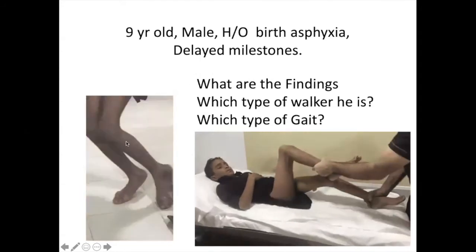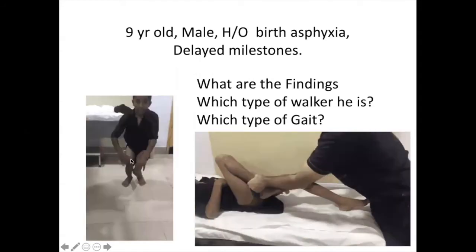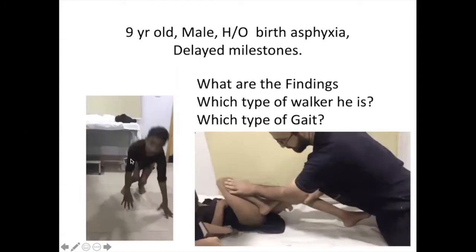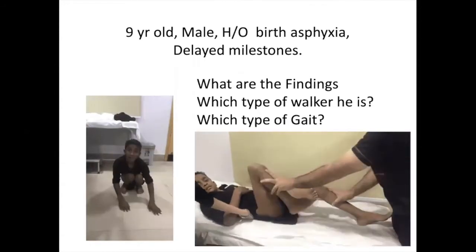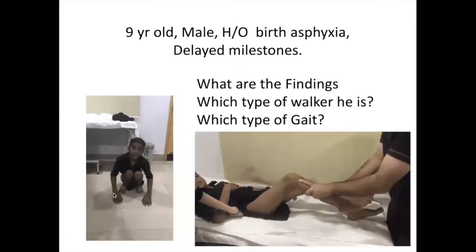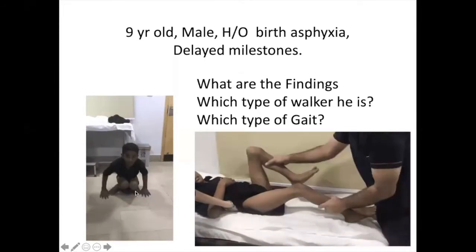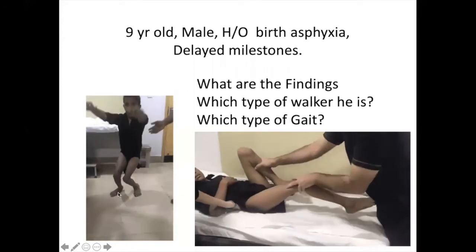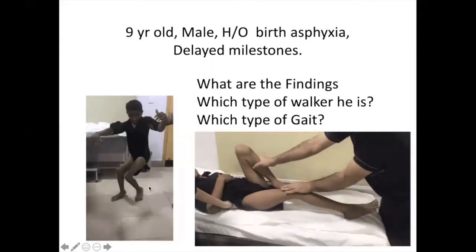This decompensation is because of the growth period. When there is a growth period, the bones grow more but the muscles do not. Therefore he may decompensate, particularly at the ankle joint. Equinus is there and there is a rocker bottom.